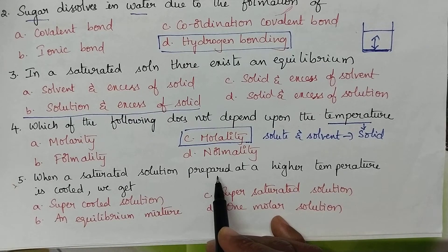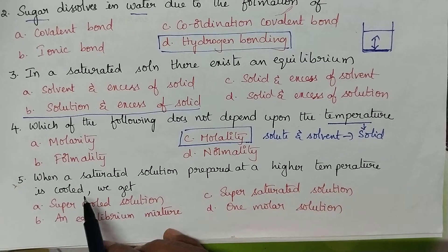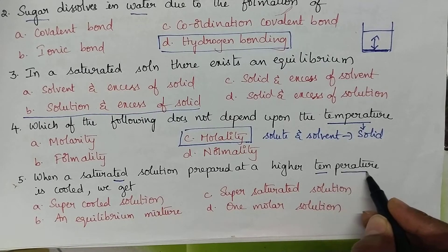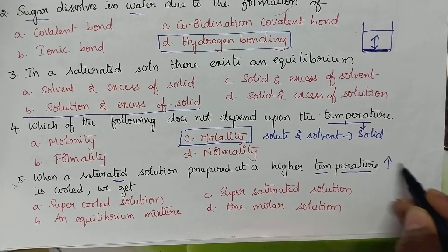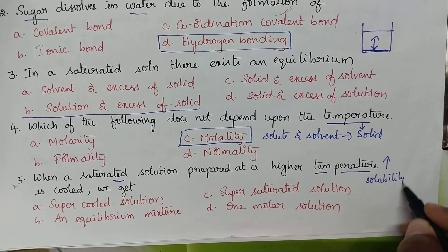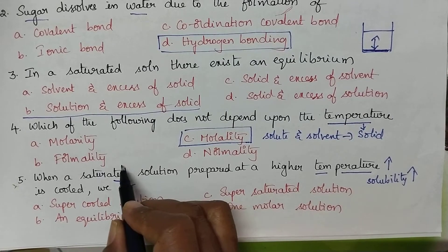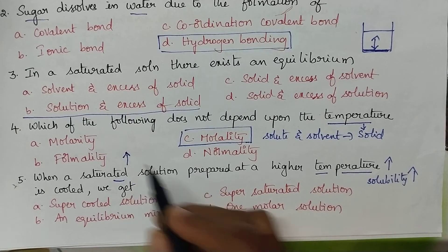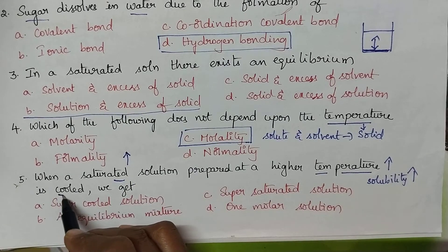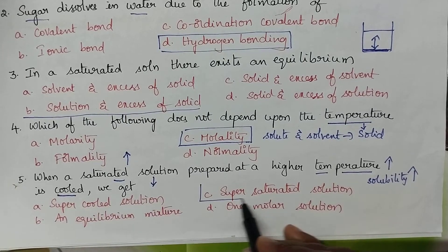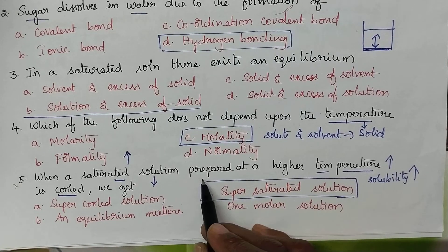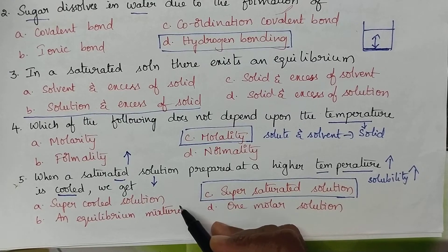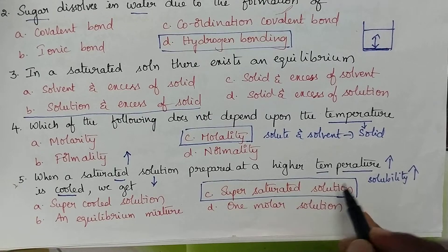When a saturated solution prepared at higher temperature is cooled, solubility depends upon temperature — as temperature increases, solubility increases. So when temperature is decreased, we get a supersaturated solution. The solute precipitates out from the saturated solution, resulting in the formation of a supersaturated solution.